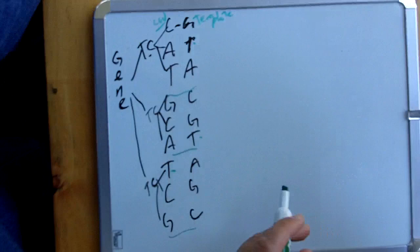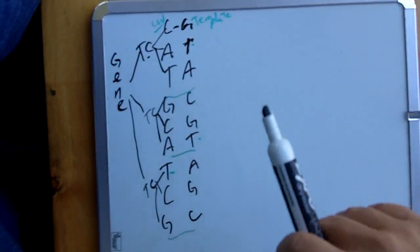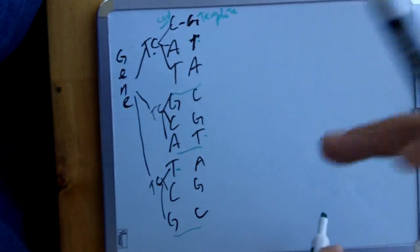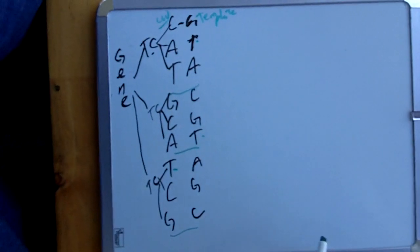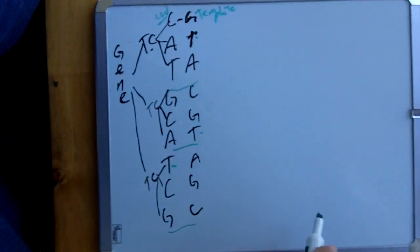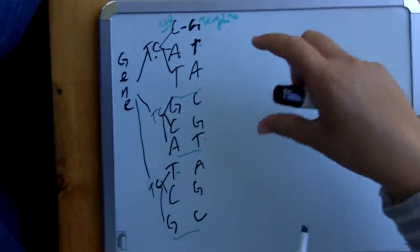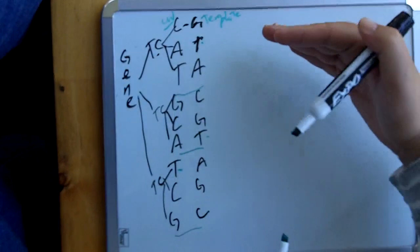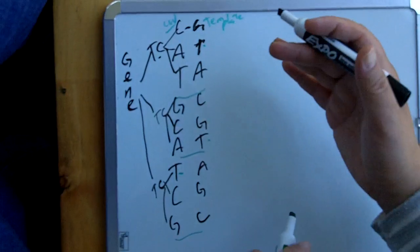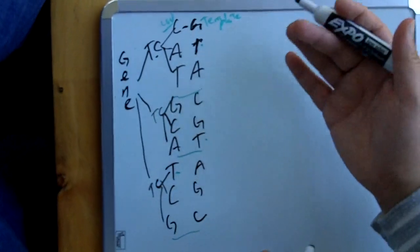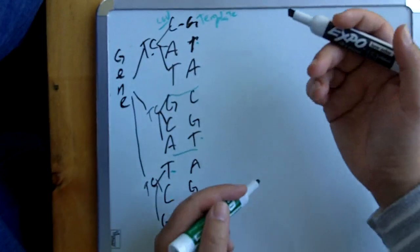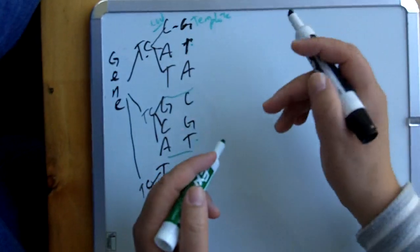This gene could be for anything — if it was us, it could be for eye color, hair color, or anything really. It doesn't matter what the gene is, it's just specific. Obviously I'm drawing on a whiteboard, so this is significantly smaller than what you would actually see a gene be, but we're doing this to make things easier to understand.